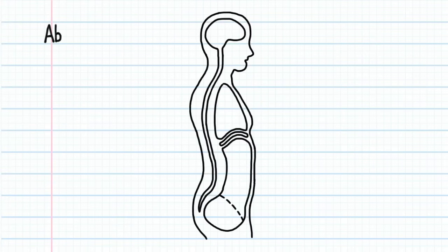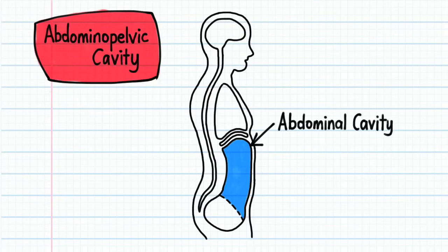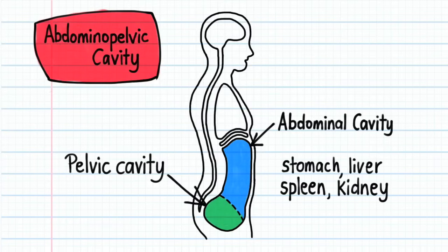The abdominal pelvic cavity can be subdivided into a superior abdominal cavity and an inferior pelvic cavity. The abdominal cavity contains the stomach, liver, and spleen.